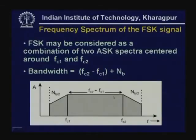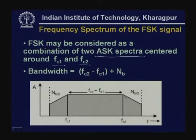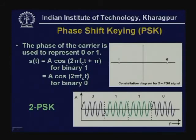The frequency spectrum of the FSK signal can be considered a combination of two ASK spectra centered around f_C1 and f_C2. The bandwidth equals (f_C2 − f_C1) plus N_B, where N_B/2 is added on either side. The bandwidth requirement for FSK is therefore higher than for ASK.